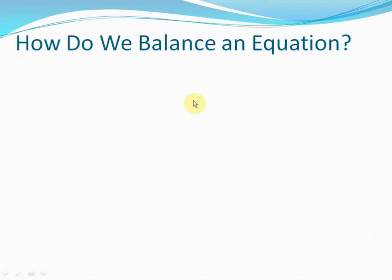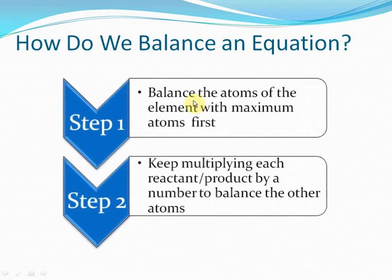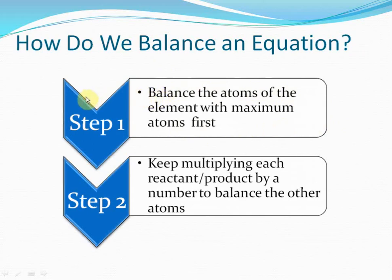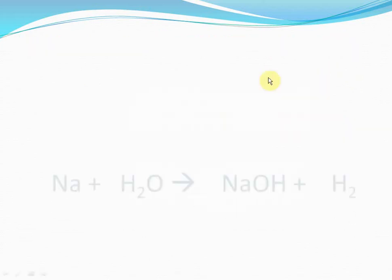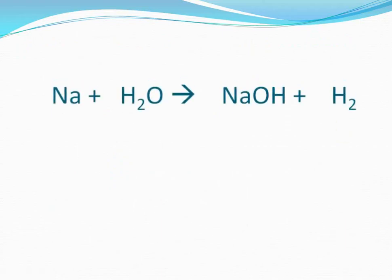How do we balance a chemical reaction if it's unbalanced? We saw H2 + O2 → H2O was unbalanced. To balance equations, we follow a step-by-step method. The first step is to balance the atoms of the element with the maximum number of atoms first. The second step involves multiplying each reactant or product by a number to balance the other atoms. Let's consider a real equation and see how we can balance it.